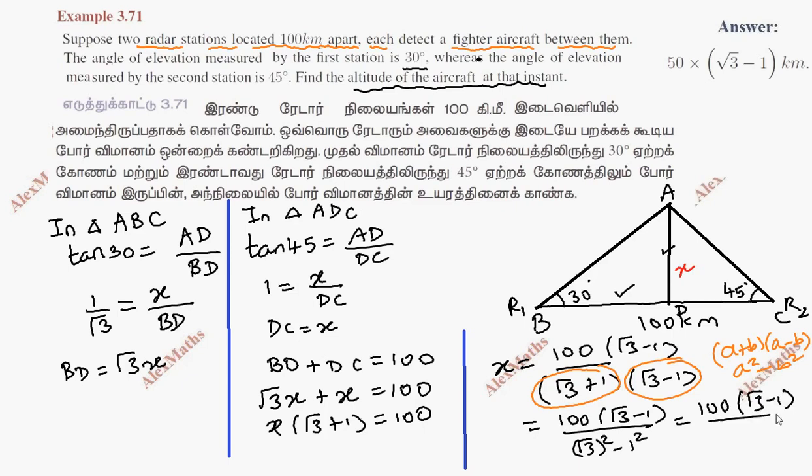The denominator is 3 minus 1 equals 2. Cancel to get x equals 50(root 3 minus 1) kilometers. So 50(root 3 minus 1) kilometers is the altitude of the aircraft at that instant.